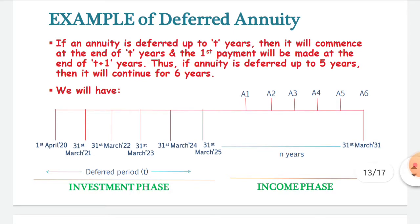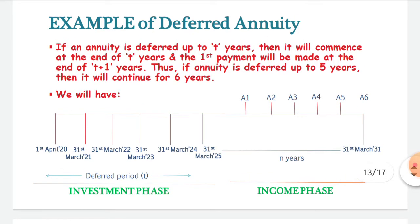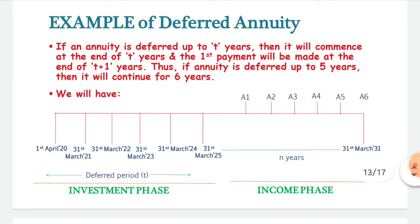The 5 years is the deferred period, which is the investment phase in which you make your installments. In the 6th year — that is 5 plus 1 — you start receiving your income, which is known as the income phase.